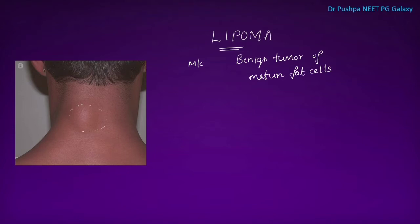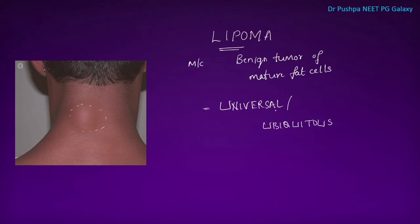Lipoma can occur anywhere in the body, that is why it is called a universal tumour or ubiquitous tumour. The common sites for lipoma are the subcutaneous tissues of the trunk, nape of the neck, and limbs.